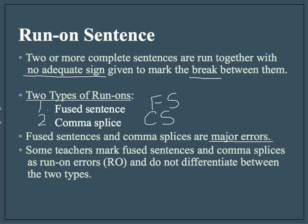Fused sentences and comma splices are considered major errors and they can take a significant toll on your paper. Some teachers mark fused sentences and comma splices both as run-on errors and do not differentiate between the two types. So if they see a fused sentence or comma splice, they may just mark either one as a run-on sentence. But it's important that you know the difference between the two, even though they are very similar errors.